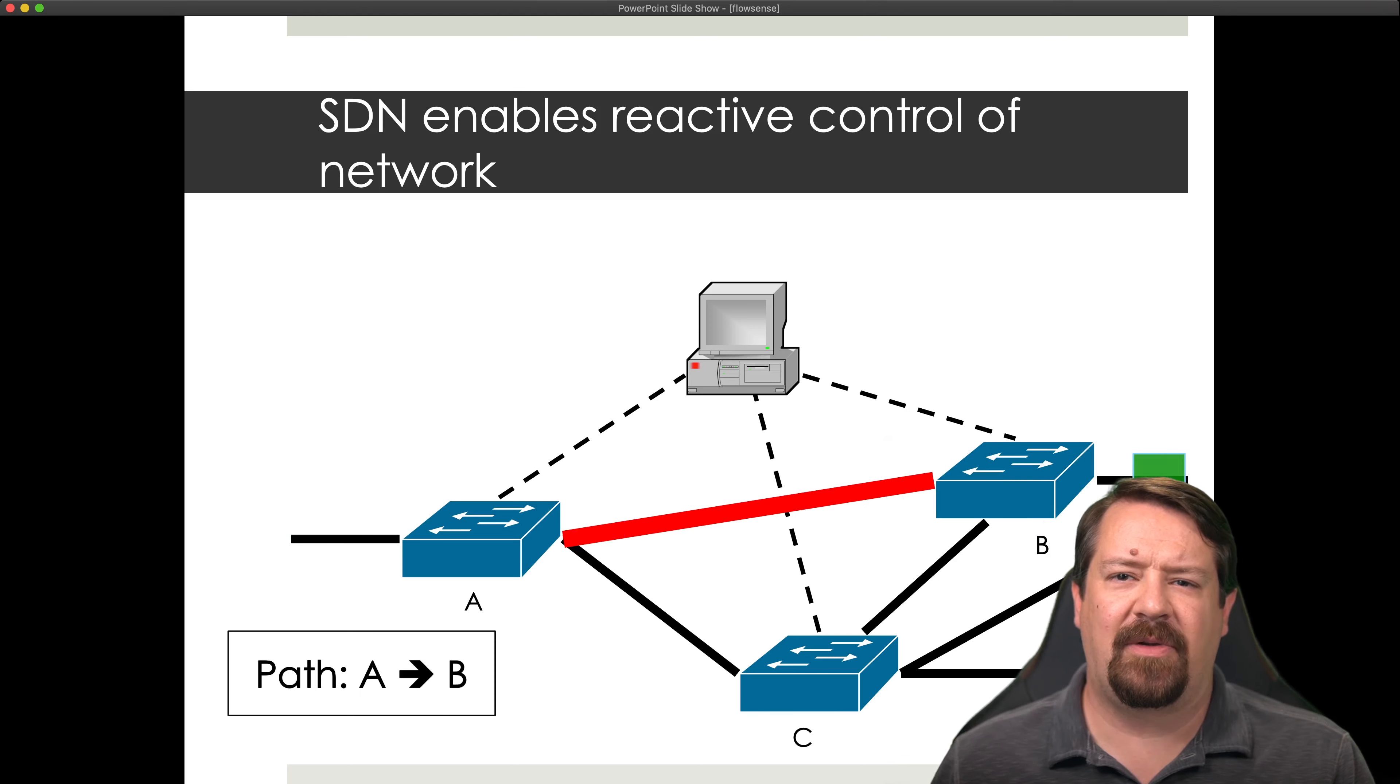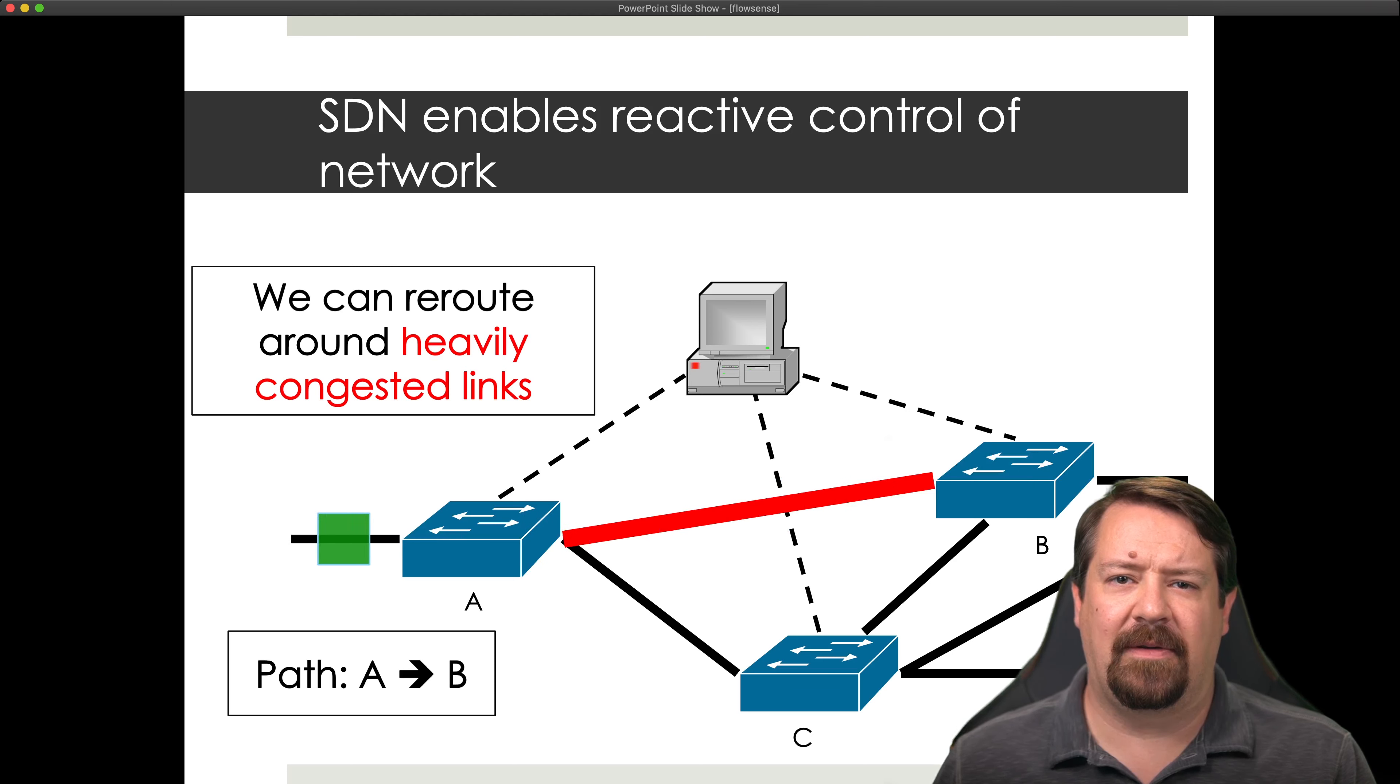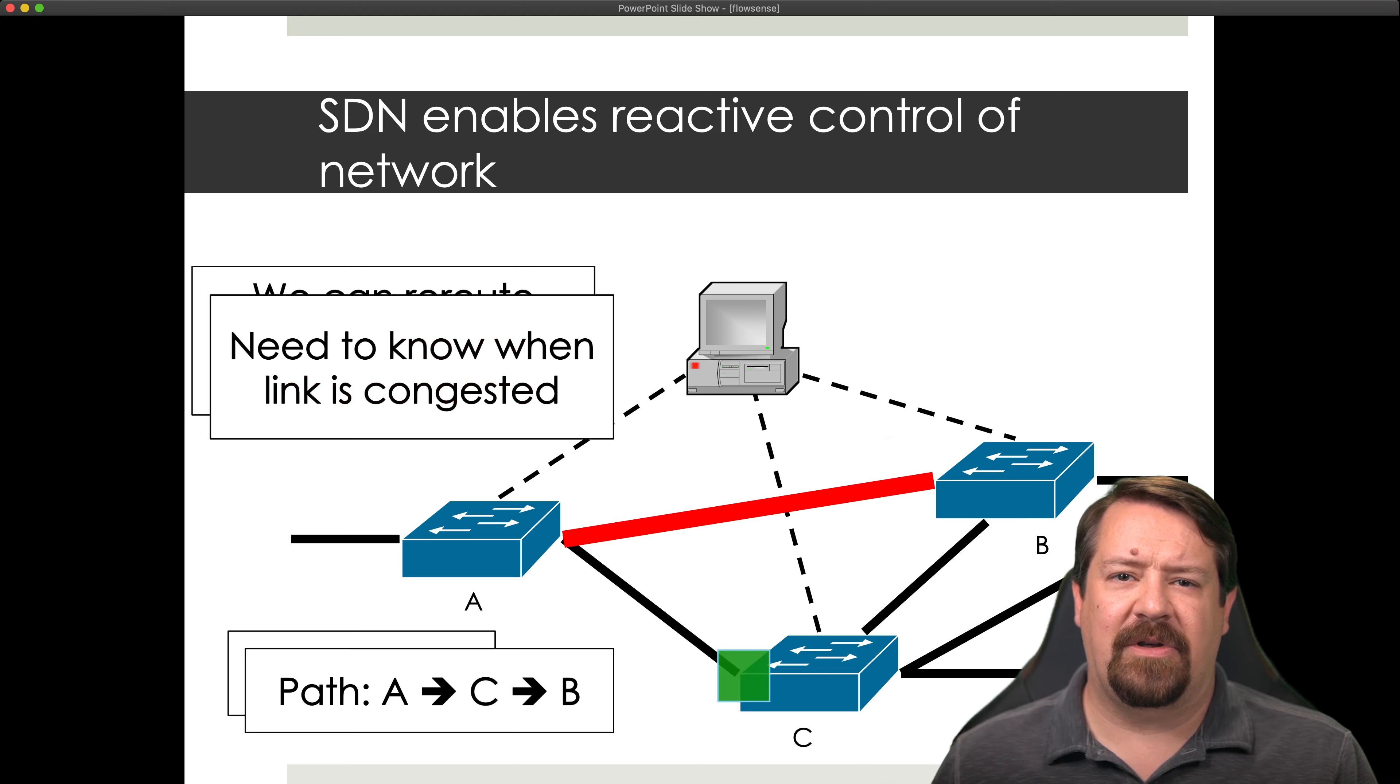So in this instance, we have the path between A and B becoming congested by the traffic flowing over it. And so potentially the OpenFlow controller could observe this and reroute based on the traffic load. So we see this detour path following ACB instead of going directly between A and B. For this to work, of course, the controller must be able to find out when the link is congested.